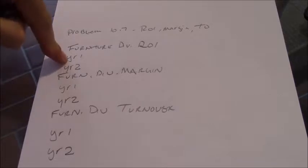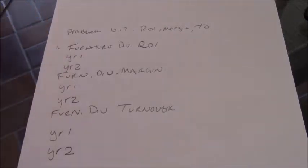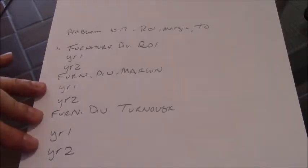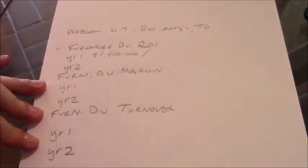Let's do our ROI first. That's our operating income divided by our average operating assets, right? It's a return on our investment. For year one, operating income was 1.4 million, and we're going to divide that by those assets, 10 million.